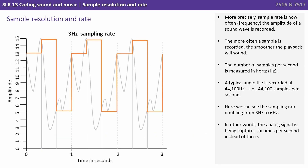More precisely, sample rate is how frequently the amplitude of a sound wave is recorded. The more often a sample is recorded or captured, the smoother the playback will sound. The number of samples per second is measured in hertz. A typical audio file is recorded at 44,100 hertz — in other words, 44,100 samples being captured per second.